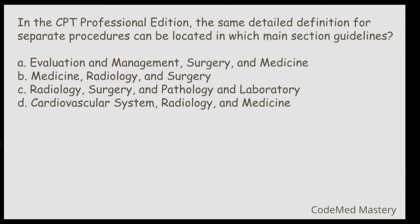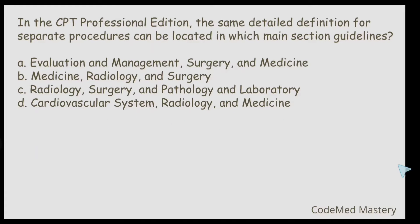Next question: In the CPT professional edition, the same detailed definition for separate procedures can be located in which main section guidelines? Option A: E&M, Surgery, and Medicine. Option B: Medicine, Radiology, Surgery. Option C: Radiology, Surgery, Pathology and Laboratory. Option D: Cardiovascular System, Radiology, and Medicine. The right answer is option B — Medicine, Radiology, and Surgery. At the beginning of those main section guidelines in your CPT book, you can find the definition for separate procedure.